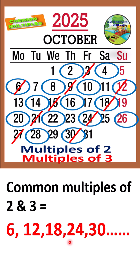You can consider some other examples also, like common multiples of 5 and 6, 4 and 3, or 2 and 5. You can practice using a calendar. It will be a fun activity for you all.